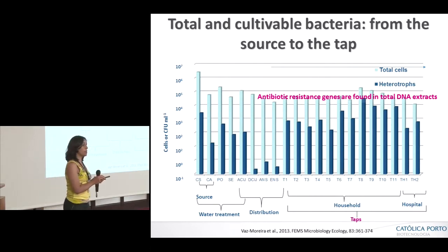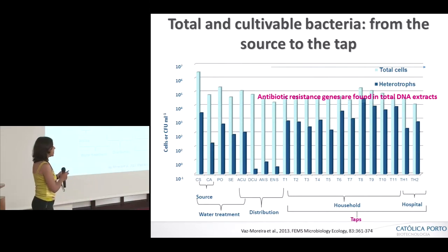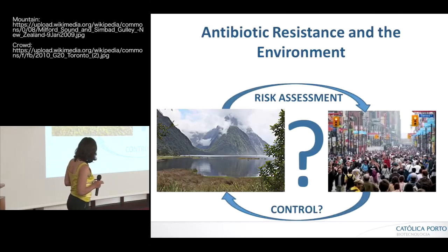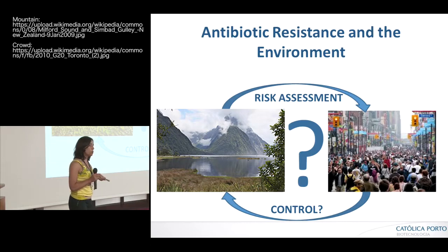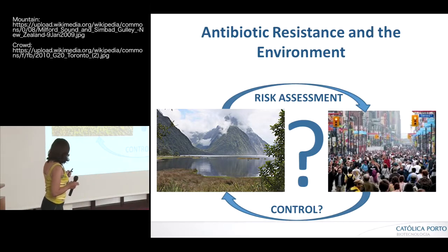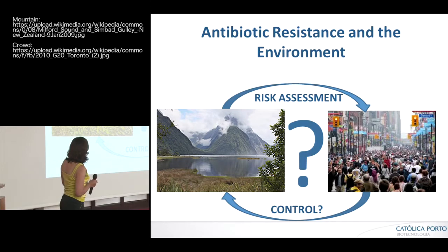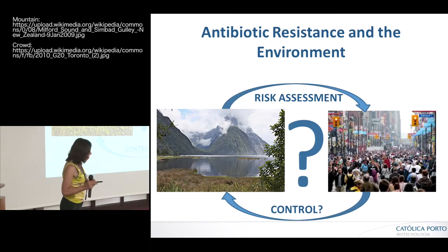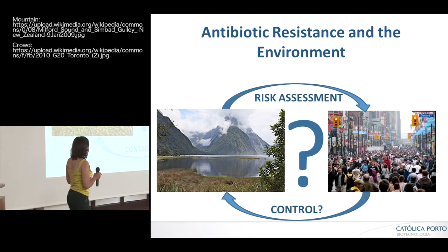We don't know the consequences of this drinking water contamination for human health. We don't know whether these genes are indeed transferred to us or not — this is a question we still have. When we look at these results, we think it's time to start doing things. On one side, we need to control whether resistance can go from the environment to humans — a major question we don't yet know the extent of. On the other side, it is very important to control this form of environmental contamination.